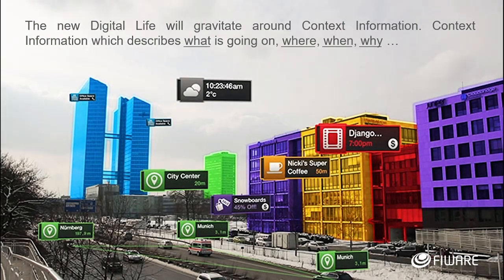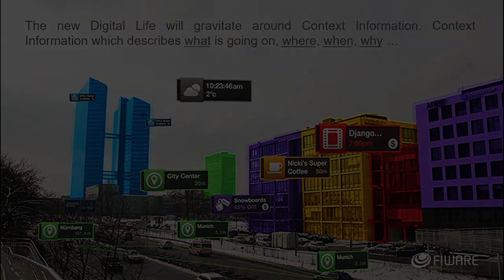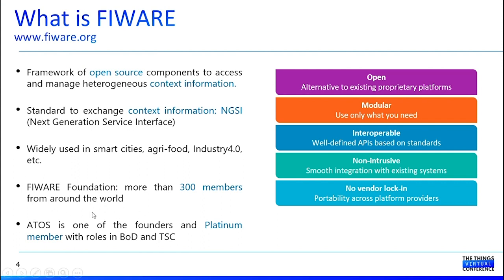FIWARE is about context. In our digital life, everything is gravitating around context information. Not only the raw data is important, but also the context where this data is produced. The context information describes not only what is going on, but also where, when, and why. Thus, FIWARE becomes a best technology for managing this context information, since it is providing an open and standard set of components that are able to manage this heterogeneity.